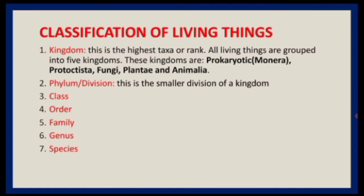The five kingdoms: First, the Prokaryote or Monera — these are unicellular microscopic organisms, examples include blue-green algae and bacteria. Second, the Protoctista — also unicellular organisms, examples include the protozoa such as Amoeba, Paramecium, Plasmodium which causes malaria, Trypanosoma which causes sleeping sickness, and also green algae and slime mold.